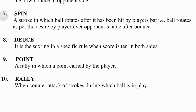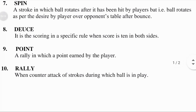Spin: spin is imparted into the ball by using a tangential brushing action with your racket. It is a stroke in which the ball rotates after it has been hit by the player's bat. When you brush your racket bat against the ball at an angle of less than or more than 90 degrees, using an upward, downward, or sideways movement, the ball rotates as desired by the player. Spin is an essential component of an advanced game.